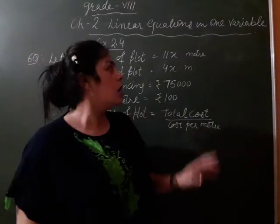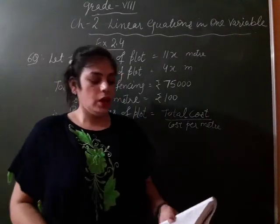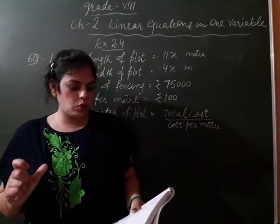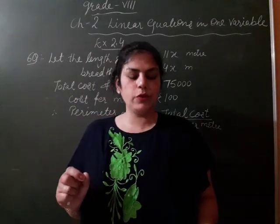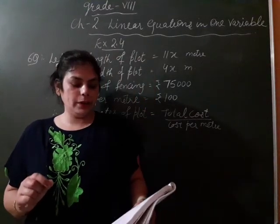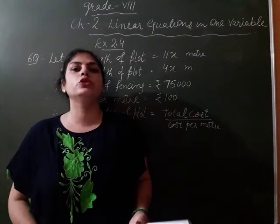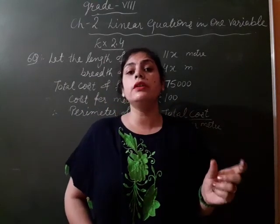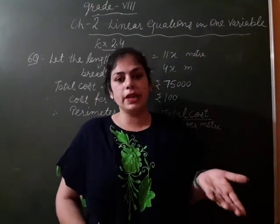We will start our six questions of exercise 2.4. Here, there is a narrow rectangular plot reserved for a school in Maholi village. The length and the breadth of the plot are in the ratio 11 to 4. You have given the ratio. When you have given the ratio, how do we assume its dimension?